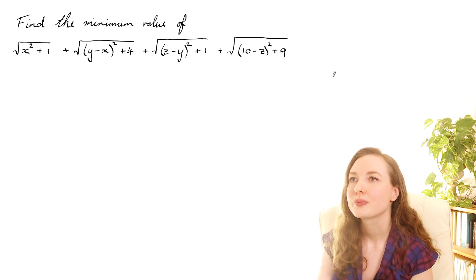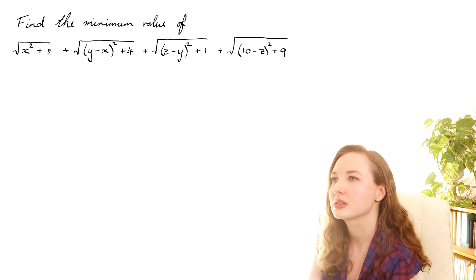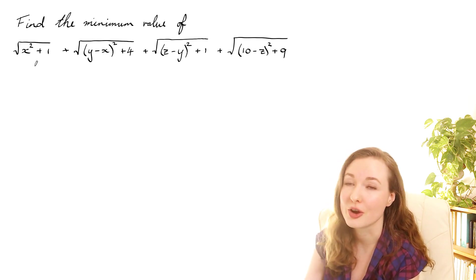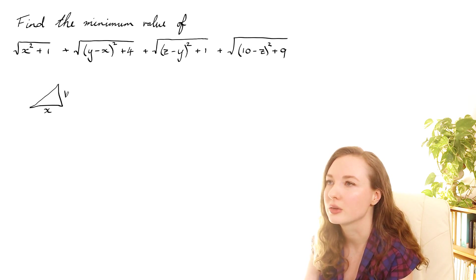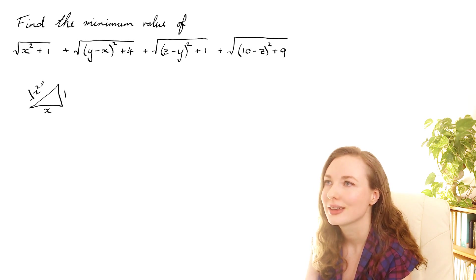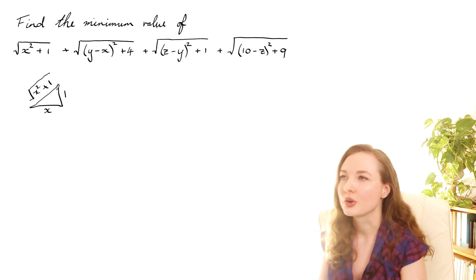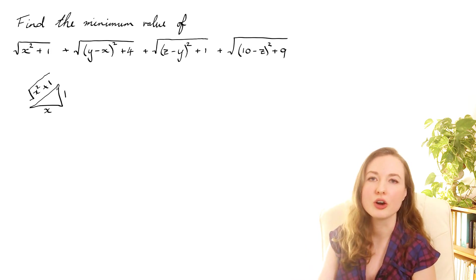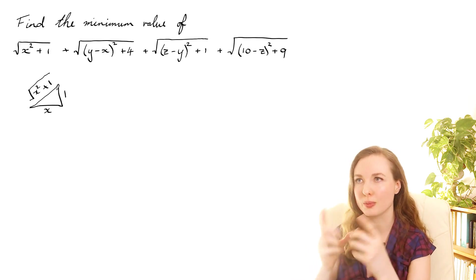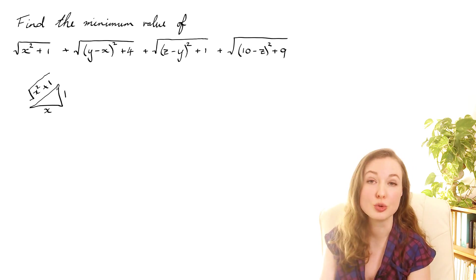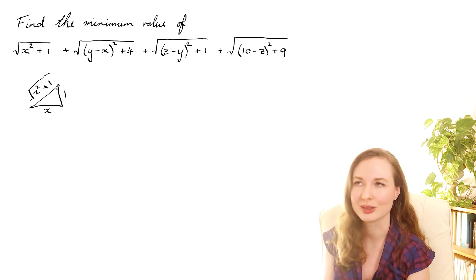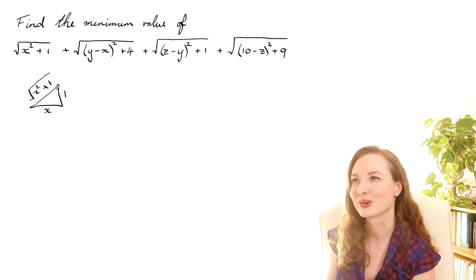So what I noticed was that this looks a lot like Pythagoras' theorem. Like if you imagine a right-angled triangle with x there and 1 then that hypotenuse is square root of x squared plus 1. So this might be helpful because if we can interpret that expression geometrically then that might actually help us to work out the minimum value rather than having to resort to calculus or something which is going to be really complicated for this question.